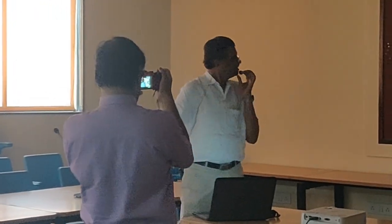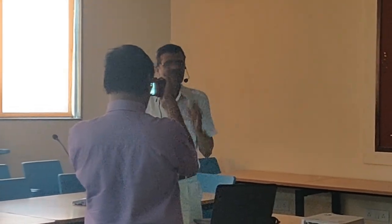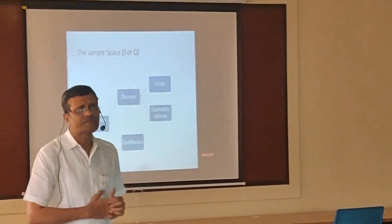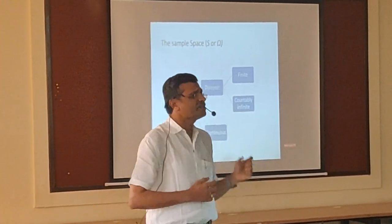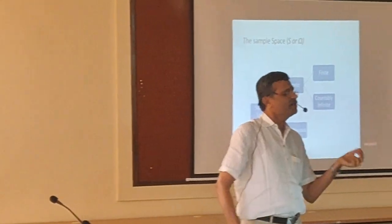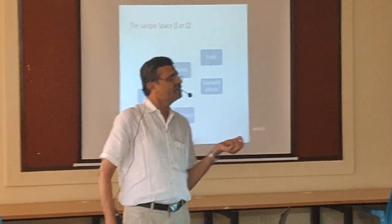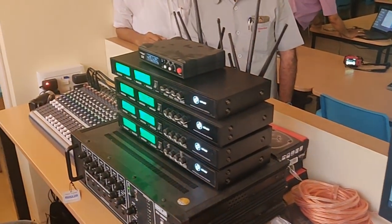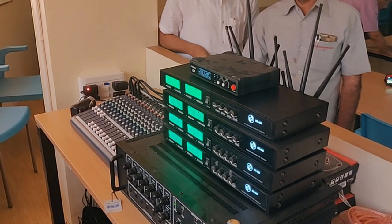For example, toss a coin — the outcome is either head or tail. Now we discuss about the sample space. Sample space is a set or collection of finite or infinite sample points. Finite sample space means the sample space which contains a finite number of sample points. For example, if we toss a coin, we get either head or tail. Therefore, those are the sample points under this sample space.